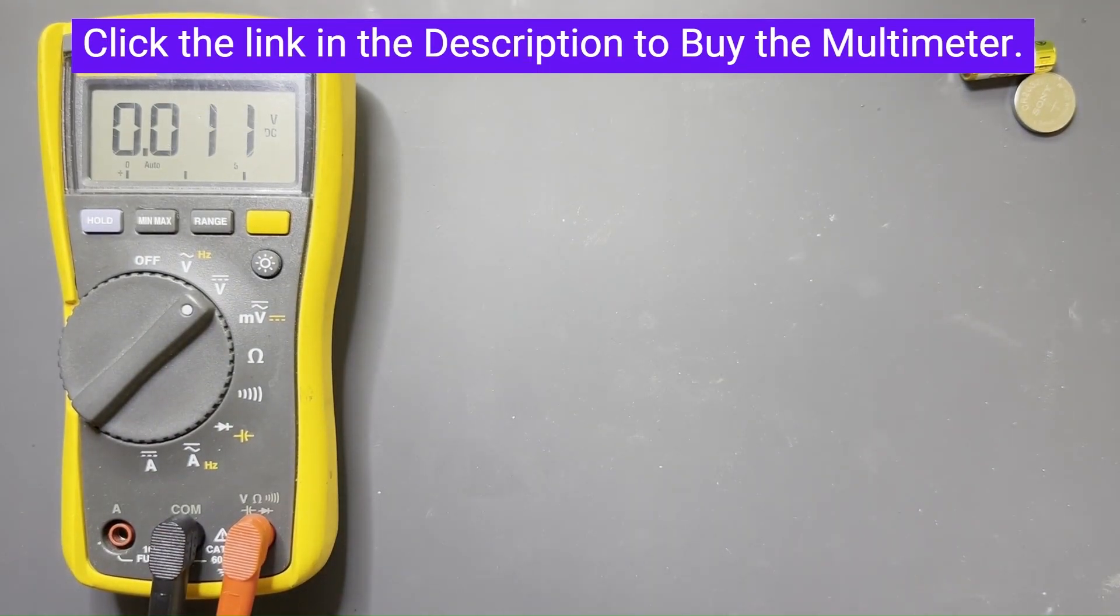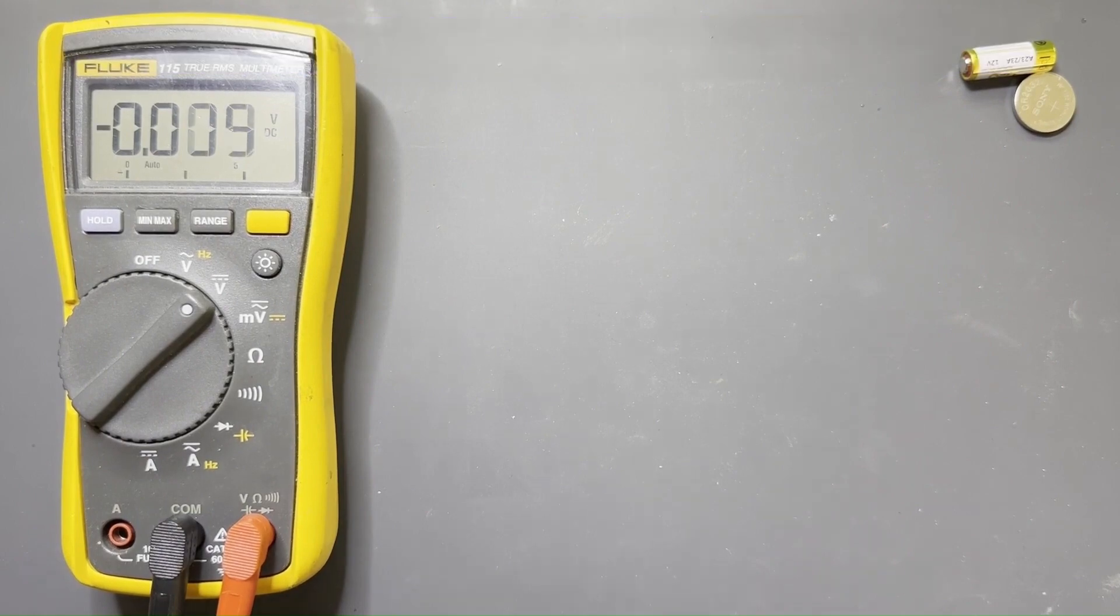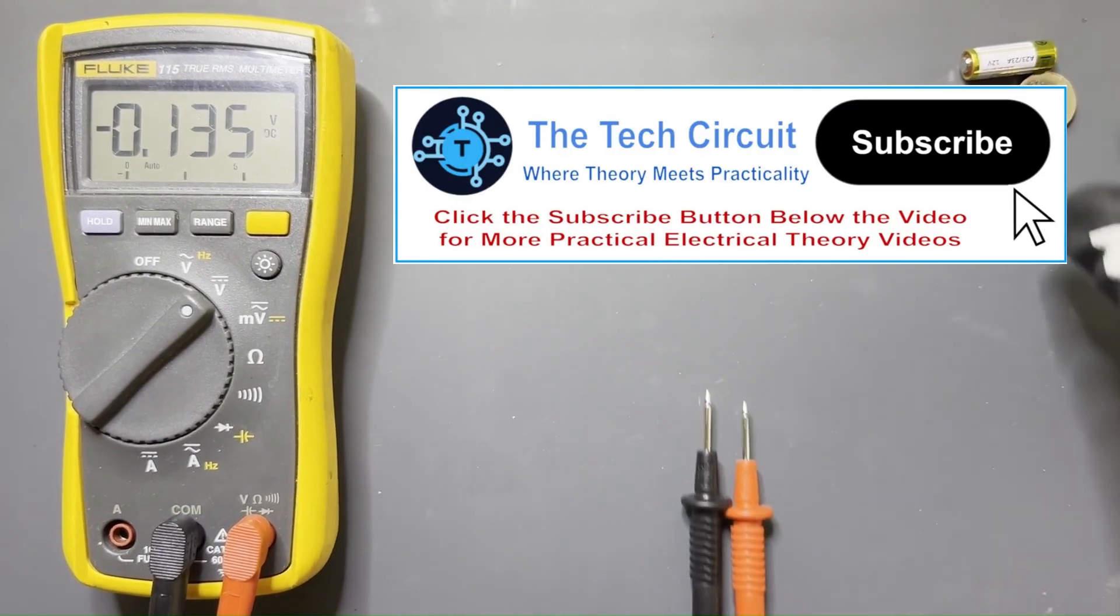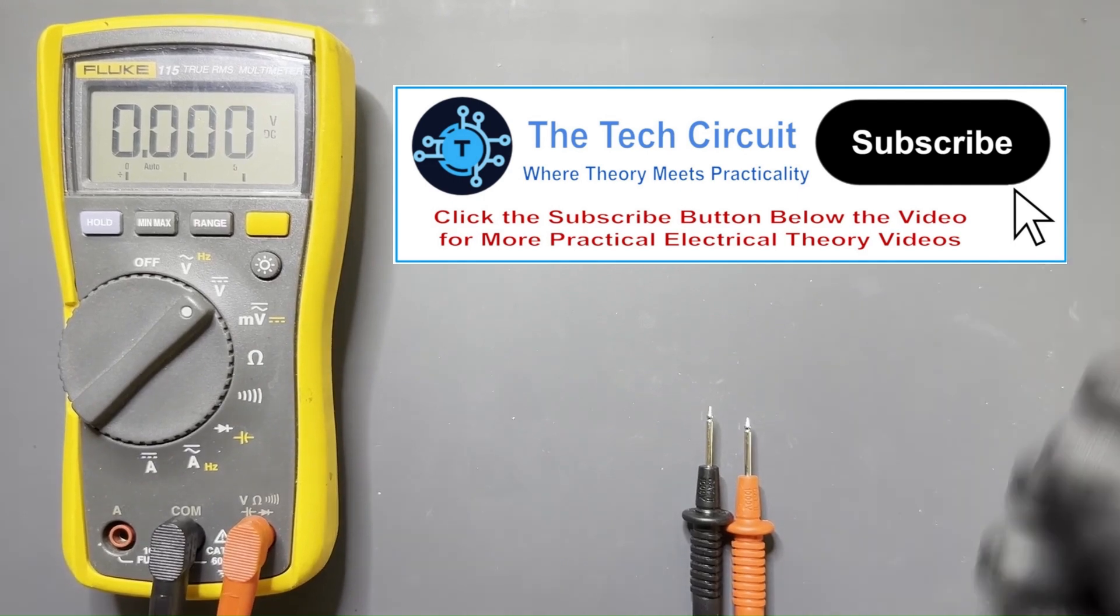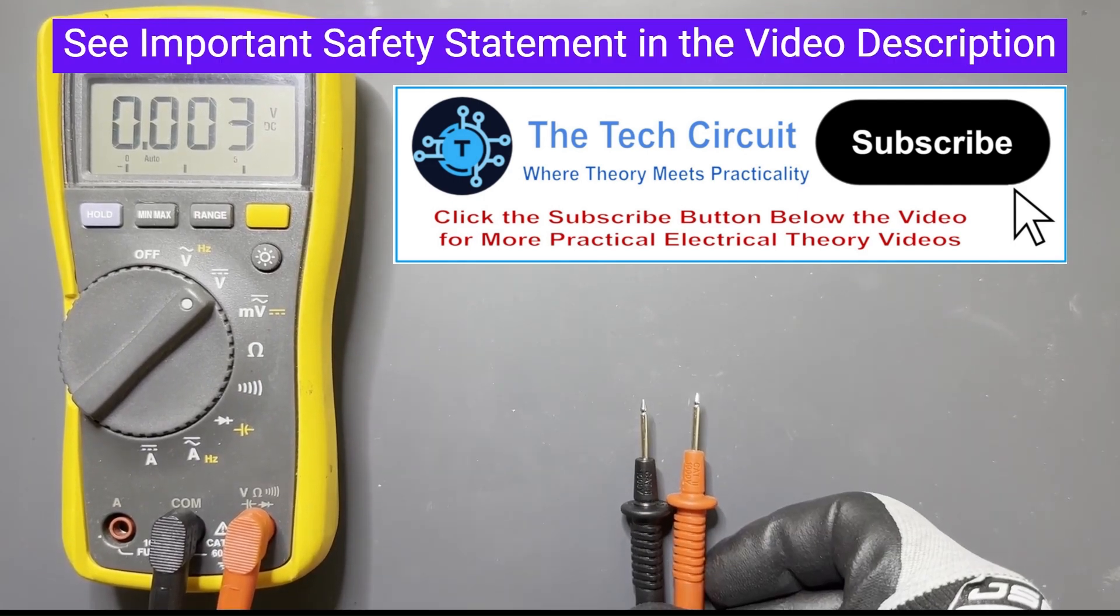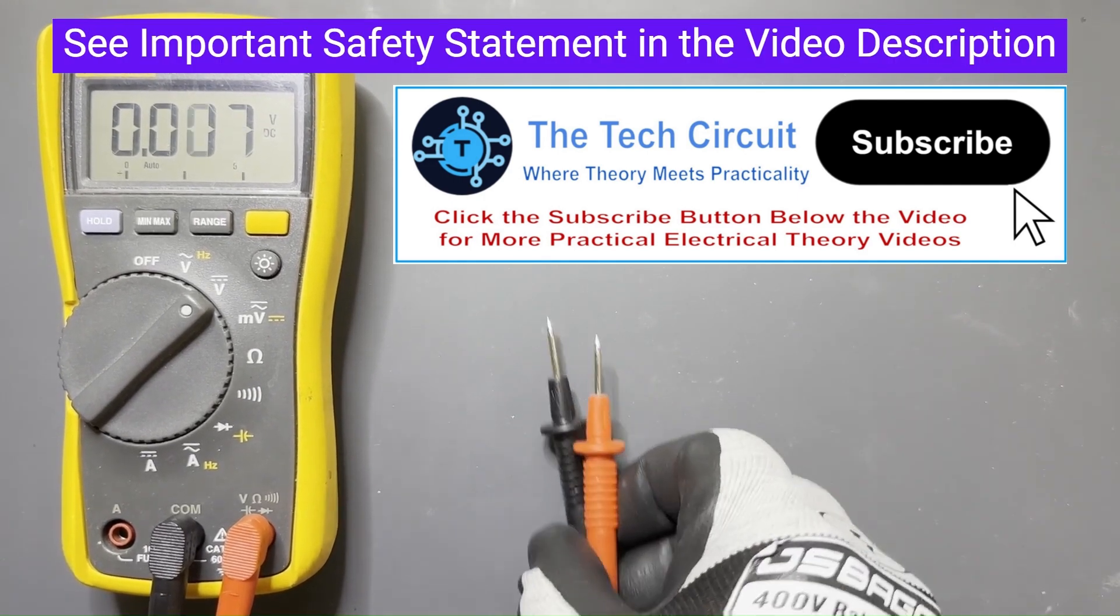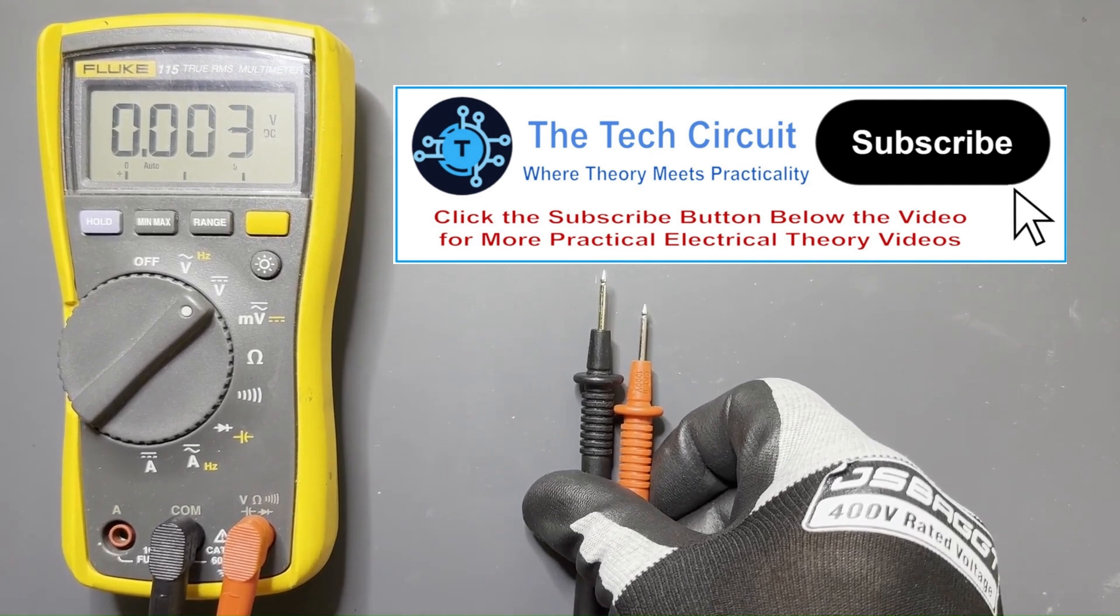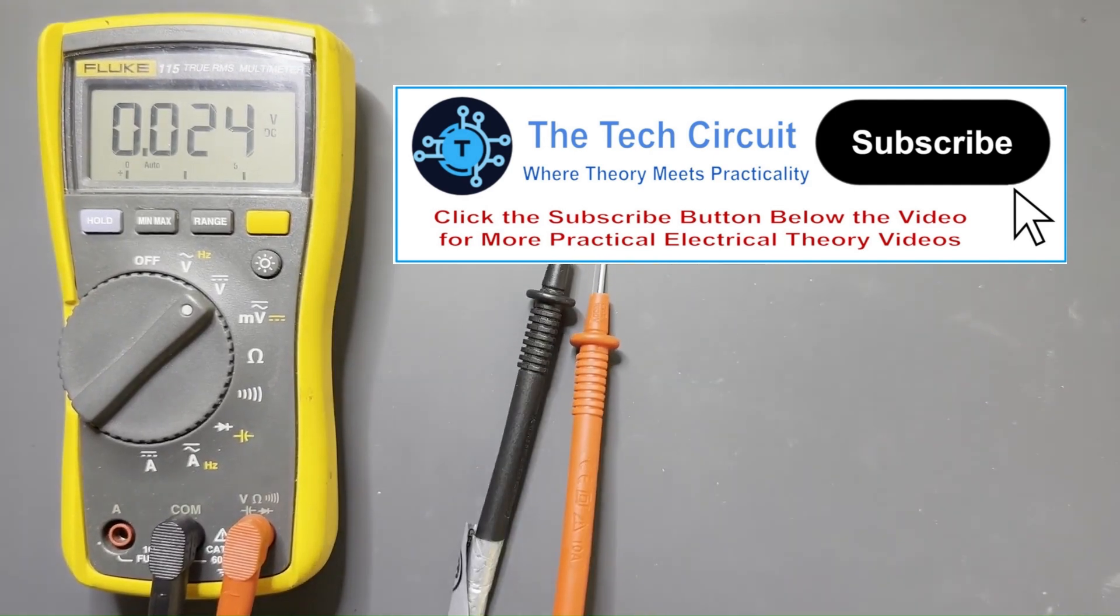So anyway, that's how you test household batteries using a multimeter. For a little safety statement, check the video description. I hope you found this video helpful and informative. If so, please give it a like and subscribe to this channel. Thanks for watching.